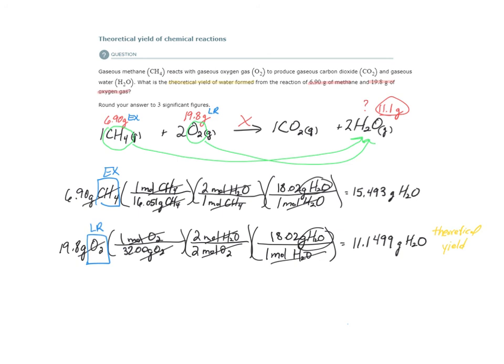In theory, theoretically, I should be able to make this much water. Now, will you get that in practice? For a variety of reasons, no. You never really get your full theoretical yield, but on paper, this is what we should produce, assuming this reaction goes to completion.